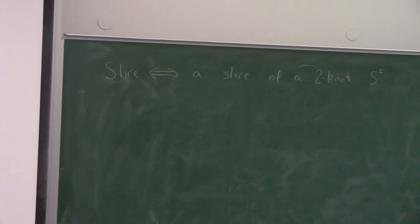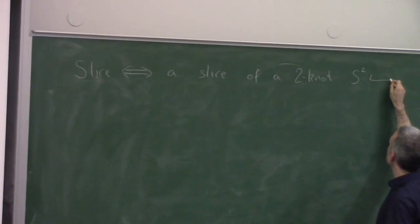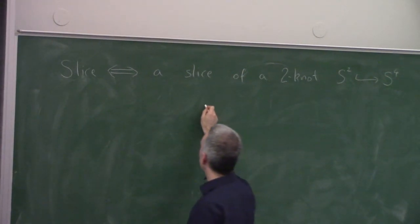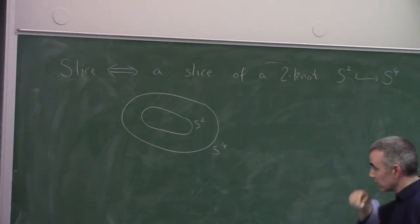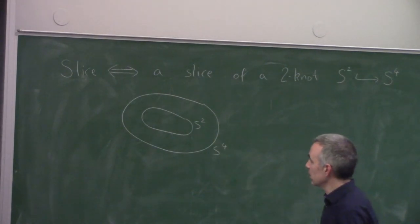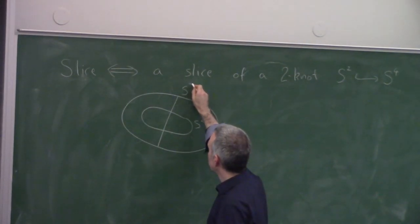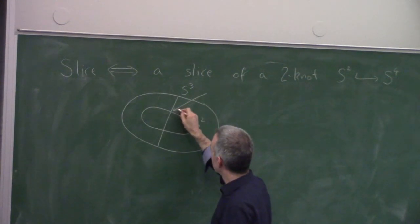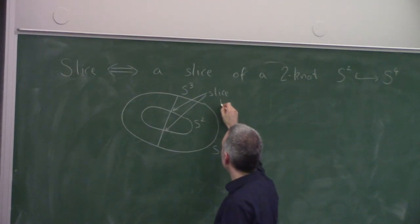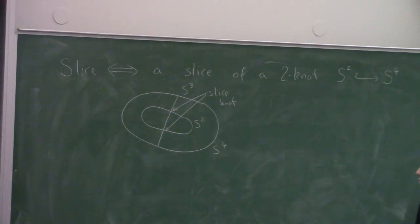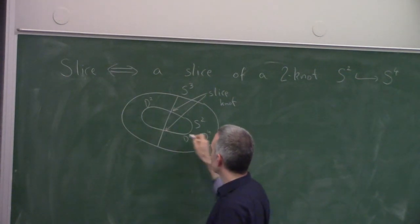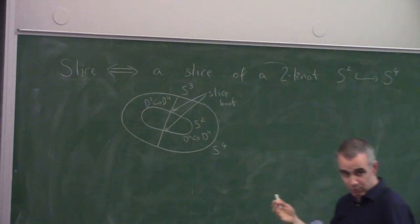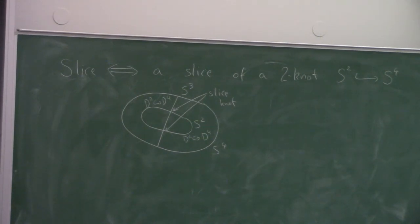Why is it called a slice knot? Slice is equivalent to being a slice of a two-knot. Just as a one-dimensional knot is an S¹ in S³, a two-knot is an S² in S⁴. To get a three-dimensional picture, you take a cross-section — cut S⁴ with an S³ — and what you get is a slice knot. In terms of the four-ball, you get two disks on either side sitting inside a four-ball. Conversely, if you have a slice disk in a four-ball, you can double it and see it as a slice of a two-knot.